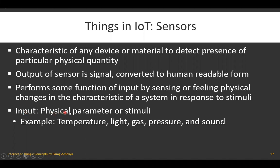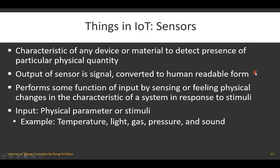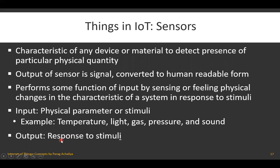The input for a sensor will be a physical parameter, also called stimuli — such as the location of a particular object, or whether that object is present or not. Examples of sensor inputs include temperature, light, gas, pressure, and sound. On the basis of that input, the sensor will generate some signal. Those signals cannot be read by human beings, so they are converted into human-readable form — for example, 27 degrees or 29 degrees as a temperature reading. The output will be the response to the stimuli.